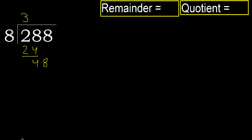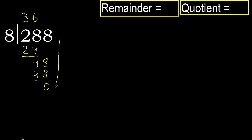Bring down to get 48. 8 multiplied by 9 is greater; 8 multiplied by 7 is greater; 8 multiplied by 6 is 48, which is not greater. Subtract — remainder is 0. Next.